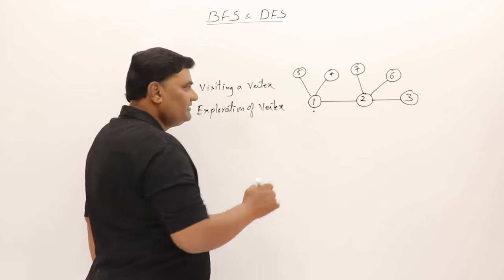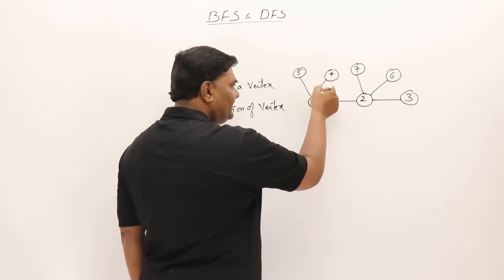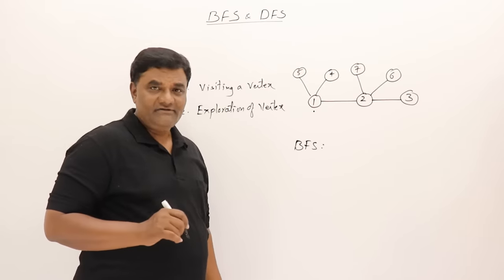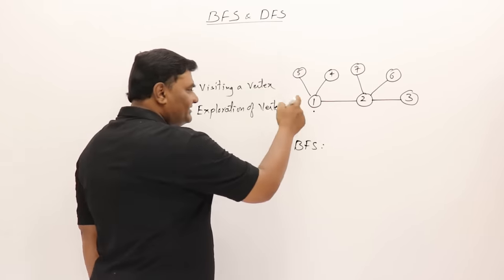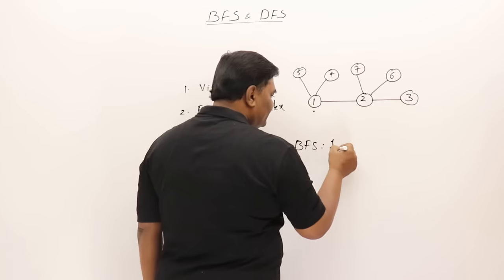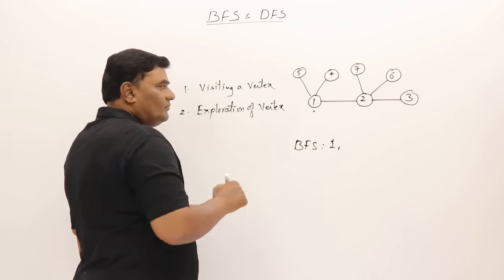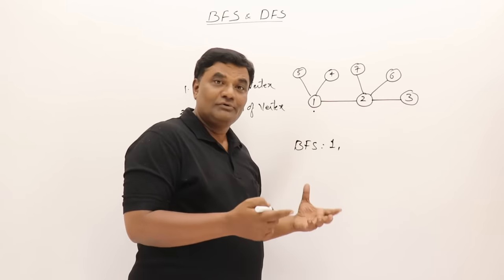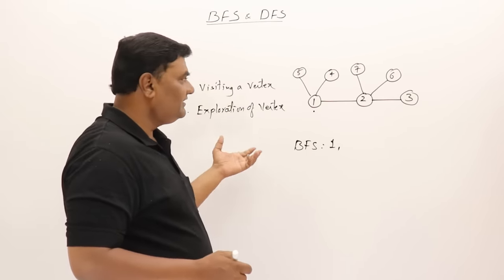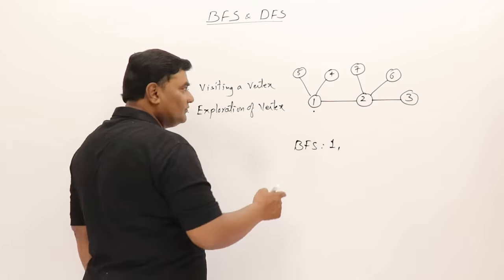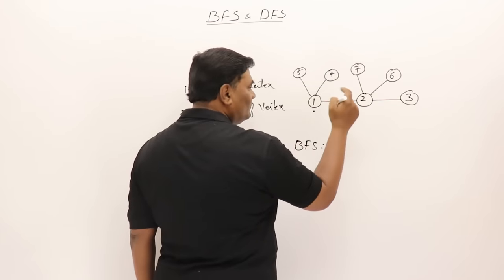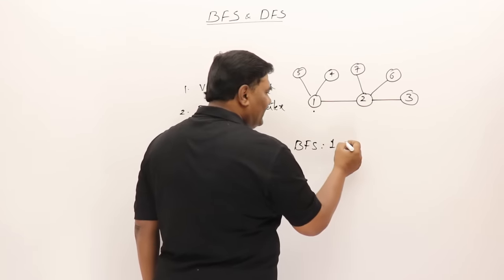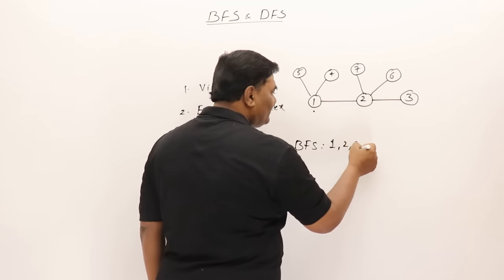For breadth first search, I am selecting vertex 1 as the starting vertex. You can select any vertex as a starting vertex. I will visit vertex 1, and once the vertex is visited I will start exploring it, meaning I will visit all adjacent vertices. Those are 5, 4, and 2. I can visit them in any order, so I'll take 2 first, then 4, then 5.